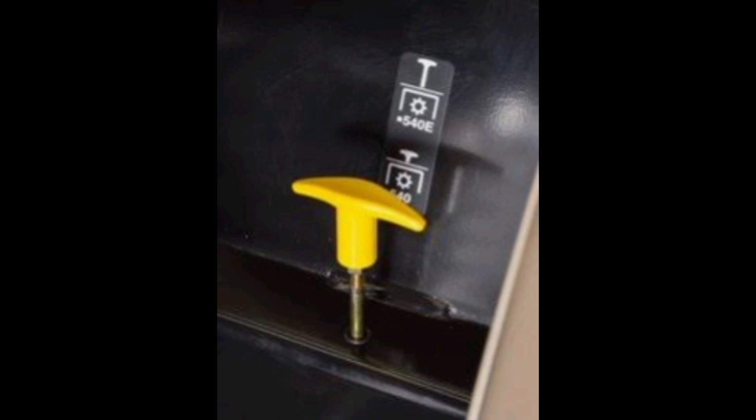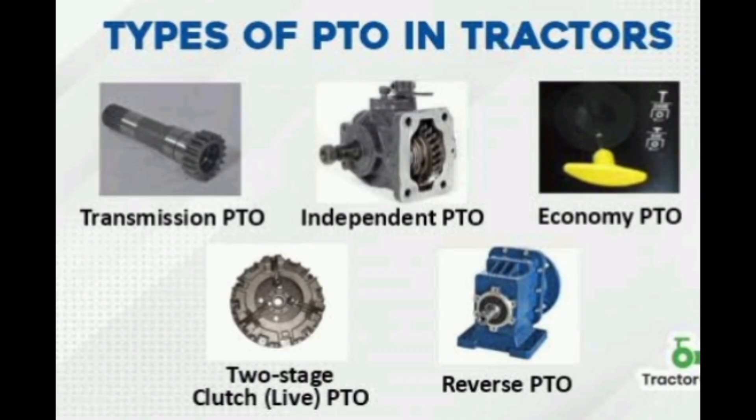Economy PTO permits the tractor to run on a lower RPM of 540 RPM, which helps save fuel, decrease vibration, and lessen noise. It is best for many implements that include bearing, moving, and tilling. Reverse PTO in a tractor is used to turn the tractor in the reverse direction using a button, and it is used when farm equipment gets stuck during farm activities.